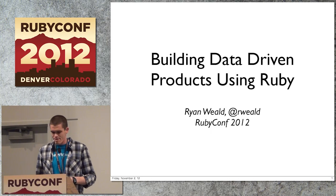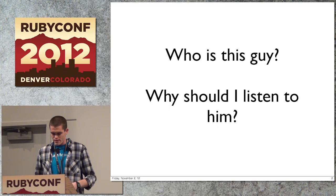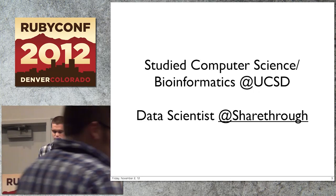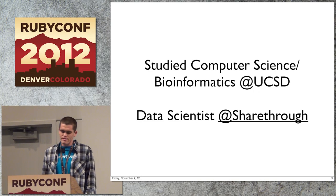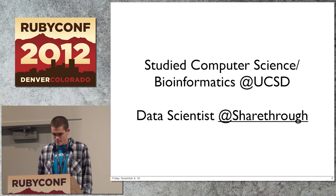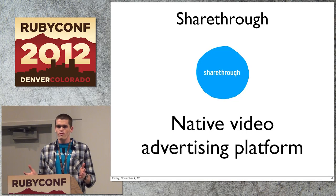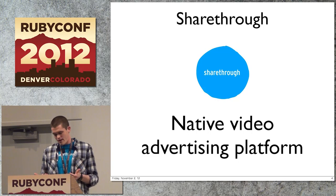You're probably wondering who I am and why you should listen to me. I studied computer science and bioinformatics at UCSD before I dropped out to join the startup scene in San Francisco. I'm currently a data scientist at ShareThru, which basically means I'm an engineer who also happens to be good at math, and since I live in Silicon Valley they decided to call me a data scientist. ShareThru is a native video advertising platform — we consume large amounts of data about users all over the web to customize ad experiences and make ads suck less. Somebody pays me to do this, so I must kind of know what I'm talking about.